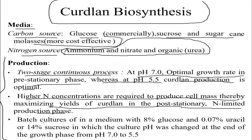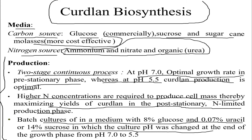In batch cultures, a medium with eight percent glucose and 0.07 to 14 percent sucrose is used, and the culture pH is shifted from 7 to 5.5 at the end of the growth phase to enhance curdlan production.